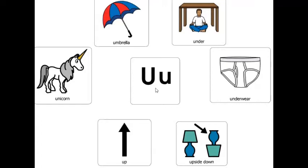Let's play a game. What word that starts with the letter U is something that protects you when it rains? Umbrella.